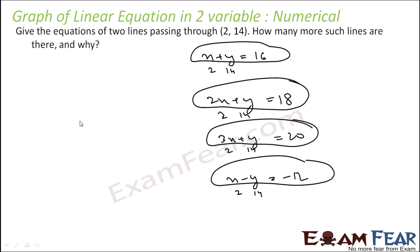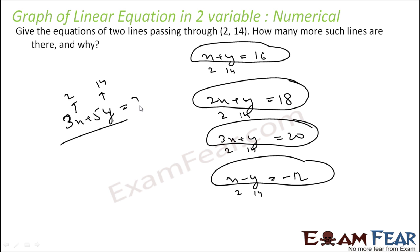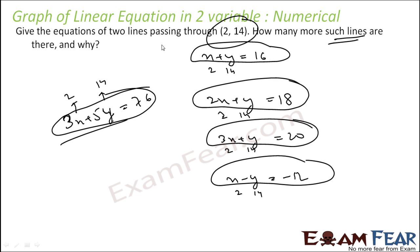Just write any algebraic expression — like 3x plus 5y or something — put the values x equal to 2 and y equal to 14: 14 into 5 is 70, plus 6 is 76. So that's another equation. You can have an infinite number of equations passing through a point, because there are infinite lines that pass through any given point.